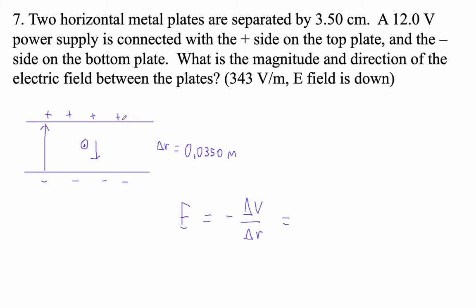So now we can do this. If I go from this plate to this plate, I go up by 12 volts, so it's the opposite of positive 12 volts. That's my change in voltage. And then I would also displace myself in a positive direction by 0.0350 meters.